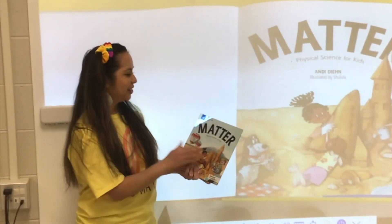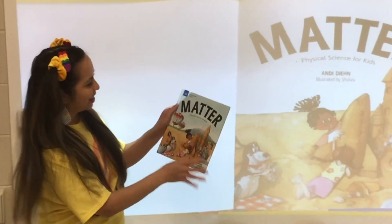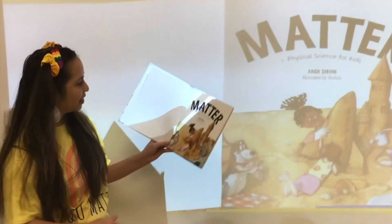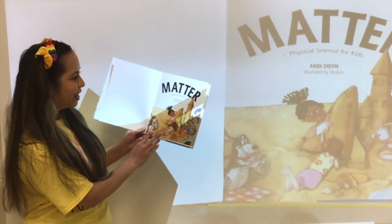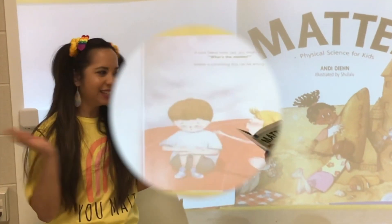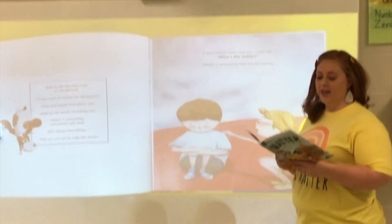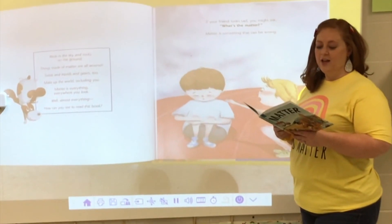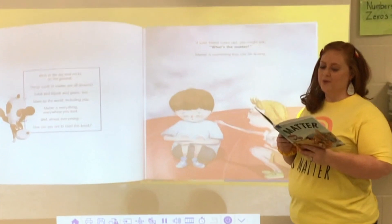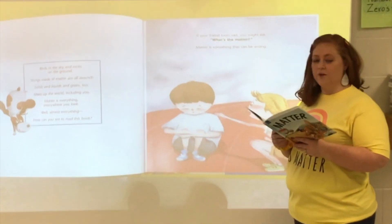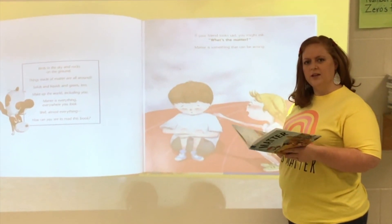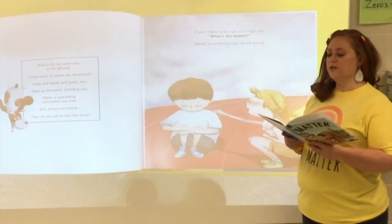The third grade team and I are going to read a book called Matter! Physical Science for Kids! The author is Andy Dine, illustrated by Shilulu. Do you guys know what matter is? Birds in the sky and rocks on the ground — things made of matter are all around. Solids and liquids and gases too make up the world including you. Matter is everything, everywhere you look — well, almost everything. How can you see to read this book?